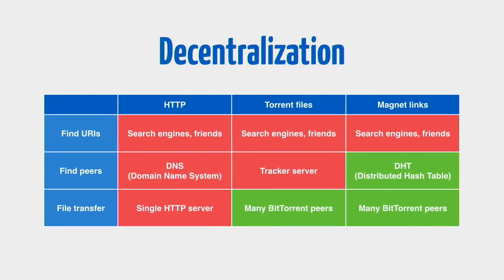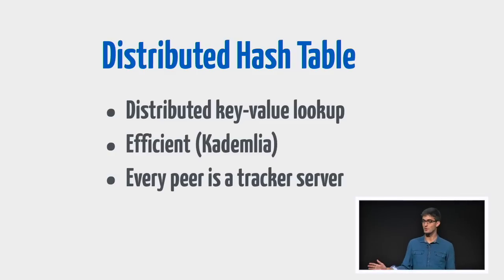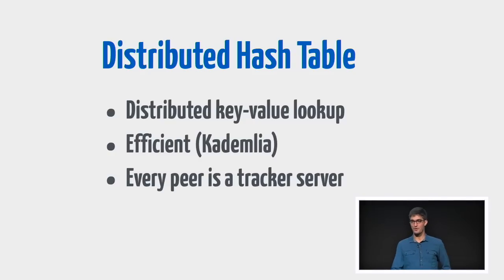But we can do better. This is where magnet links come in. With magnet links, we use something called a distributed hash table to find peers, so we can actually eliminate the tracker server. With magnet links, we can go from just having the info hash — this little 160-bit string — to having the full file without ever really talking to a server. DHTs are one of the coolest ideas in computer science. When I first discovered what a DHT was, I was telling all my friends about it constantly. I even got off track explaining DHTs to an interviewer in a job interview.